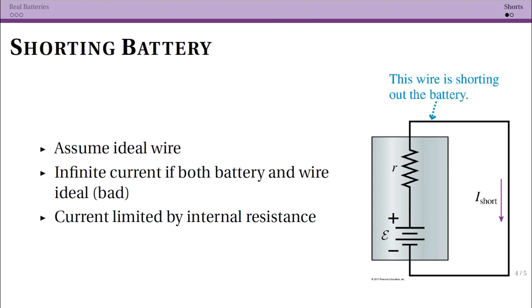The first is thinking about shorting a battery, and the book was connecting this back with the idea of a real battery and using this as a situation where you can't use an ideal battery and you must use a real battery. So the idea is that we have our battery, we have our little positive terminal here, our negative terminal here, and we're just connecting it with a wire.